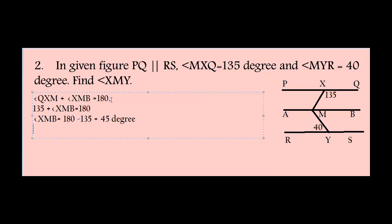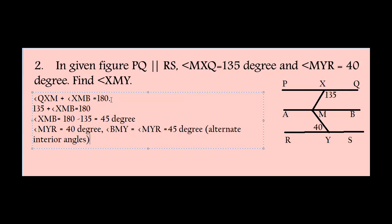Angle MYR equals 40 degrees. Angle BMY equals angle MYR, since alternate interior angles are equal.